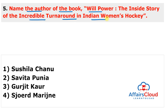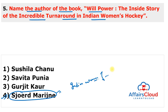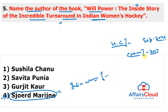The next question: Name the author of the book 'Willpower: The Inside Story of the Incredible Turnaround in Indian Women's Hockey.' The answer is Sjoerd Marijne, the former Dutch field hockey player and former Indian women's hockey coach. This book was published by HarperCollins Publishers India and launched in September 2022. Sjoerd Marijne was appointed as chief coach of the Indian women's hockey team in 2017, and later given charge of the men's hockey team coaching in September 2017.